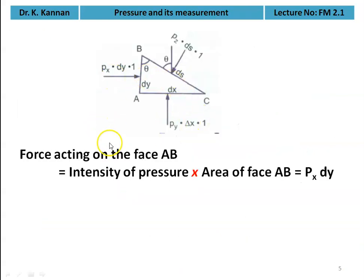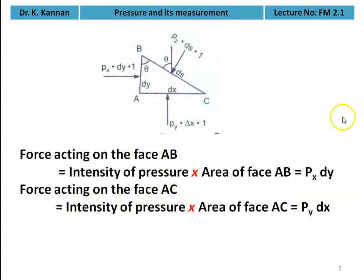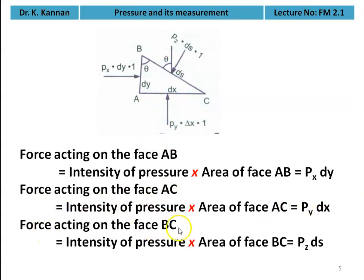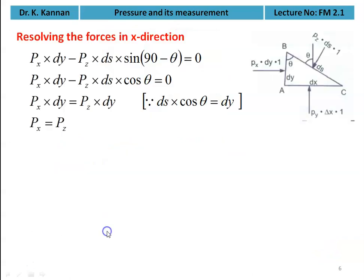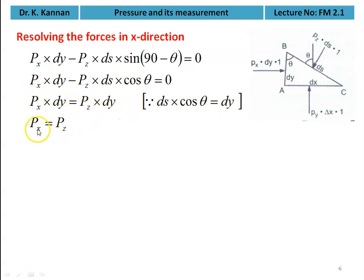Resolving forces in the x-direction: the net force equals zero, so px·dy − pz·ds·sin(90−θ) = 0. Since sin(90−θ) = cos(θ) and ds·cos(θ) = dy, we get px·dy = pz·dy, and cancelling dy gives px = pz.